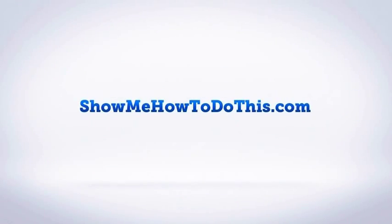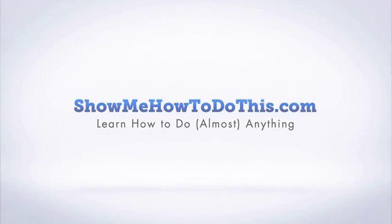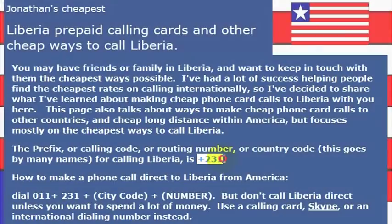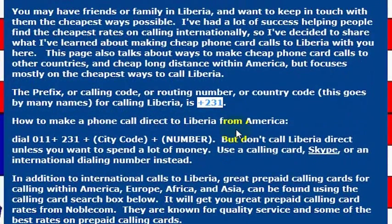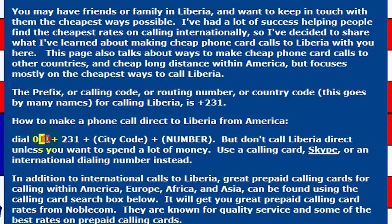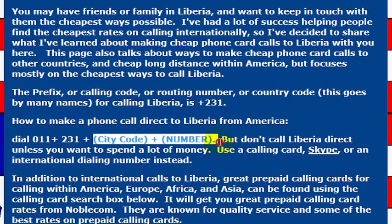To call Liberia is very simple. You do need to know the country code, which is 231. And if you're calling Liberia from the United States, you need to know the international dialing code, which is 011. So from any phone that's enabled to make an international call — most often a landline, though it may also be your cell phone — you would dial 011, then 231, which is the country code for Liberia, and then the phone number.